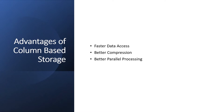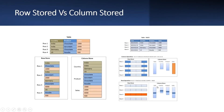Row-based tables have advantages in the following circumstances: if the application needs to process only a single record at one time, or if your application typically needs to access a complete record, then you should use a row-based table. Also, if you are using neither aggregation nor fast searching, row-based storage is appropriate. And if your table has a small number of rows, you should use a row storage table.